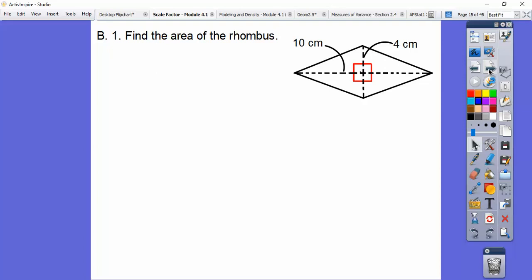Let's find the area of this rhombus. The formula for the area of a rhombus is one half the product of the diagonals. So diagonal 1 times diagonal 2, half of that. This whole diagonal is 10 centimeters, and this whole diagonal is 4 centimeters. We're going to multiply 10 times 4, take half of that. That gives us 20 centimeters squared.